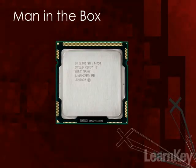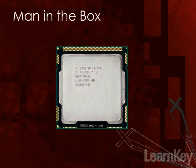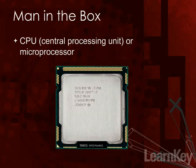This, ladies and gentlemen, is a CPU. This particular CPU is an Intel Core i7. We've probably heard of the term CPU, or central processing unit. The better term to use is microprocessor. A lot of people call these guys the brain of the computer, but it's not really a brain — it's more of a really, really incredible calculator. It can add, subtract, multiply, and divide billions of times a second.